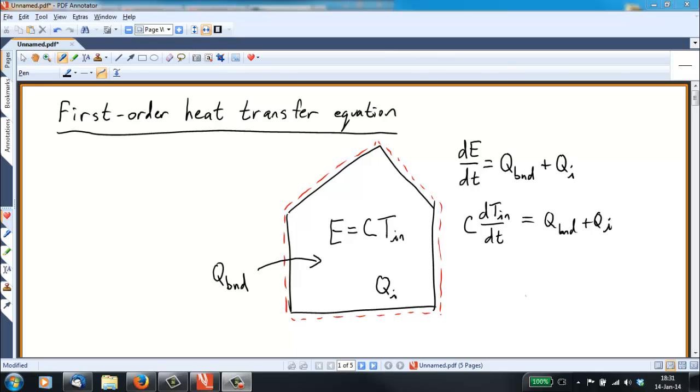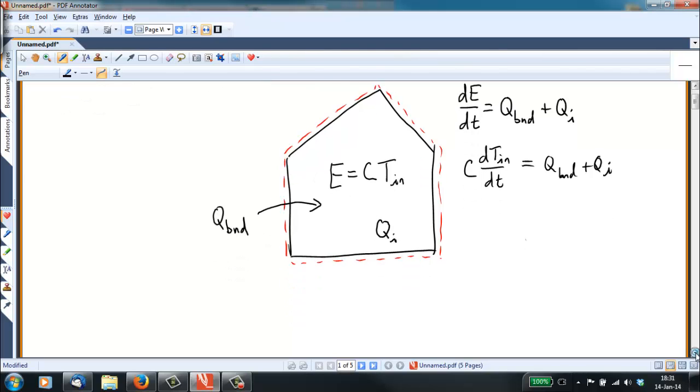Now Q_interior is a known or a specified quantity. We have a furnace that has a given size that puts out a certain amount of heat. We can read the nameplate and see what that is. We can estimate how much heat people are giving off depending on if they're sitting watching television or working out on their stationary bicycle or something like this. The more difficult one is to figure out how the heat is flowing across the boundary.